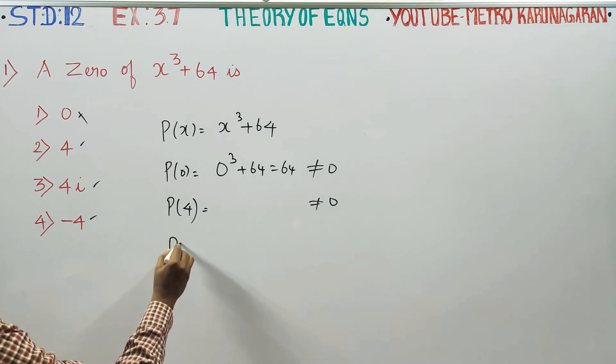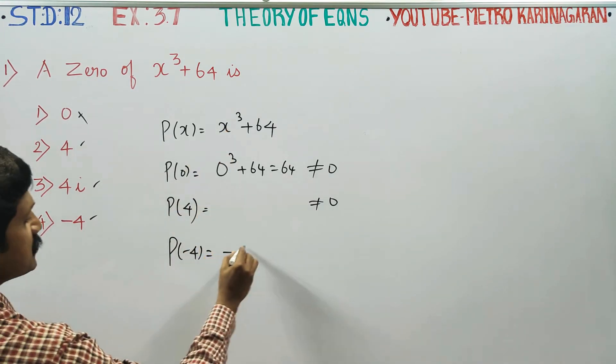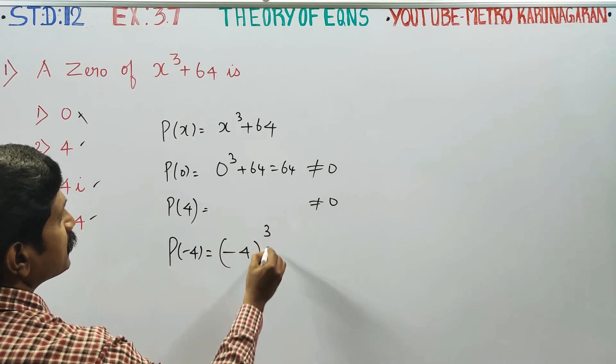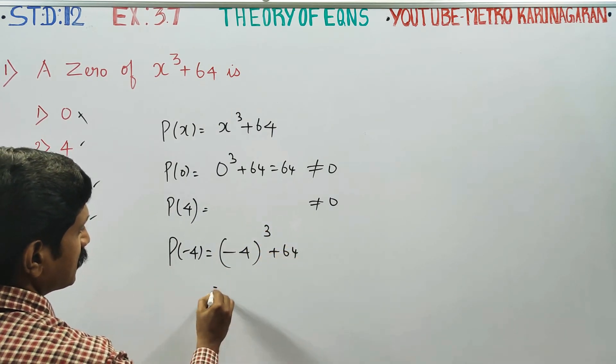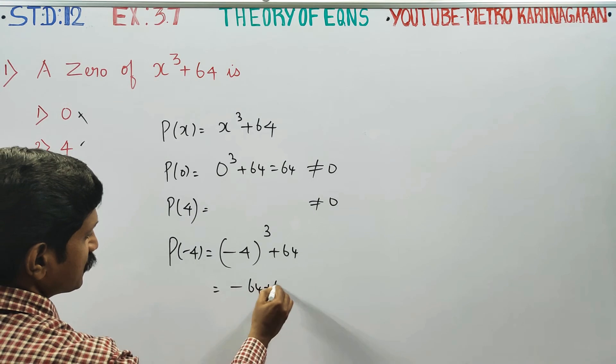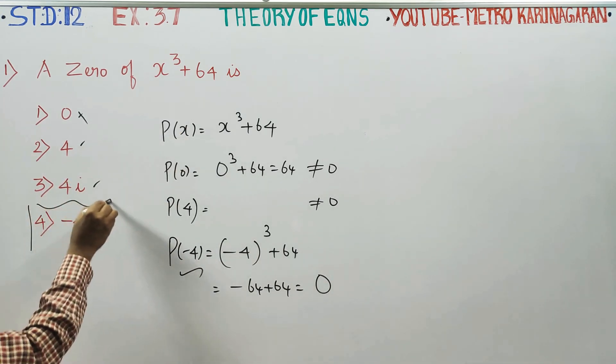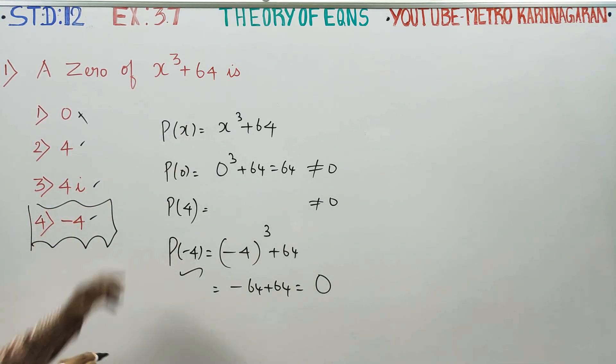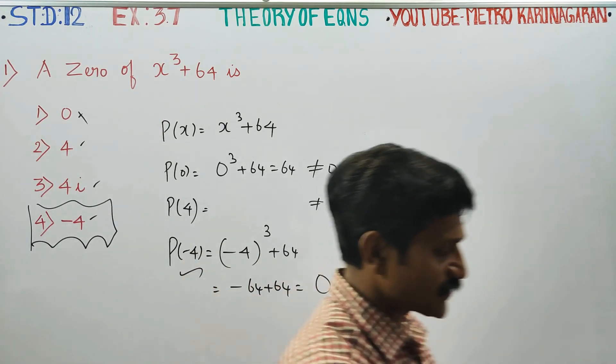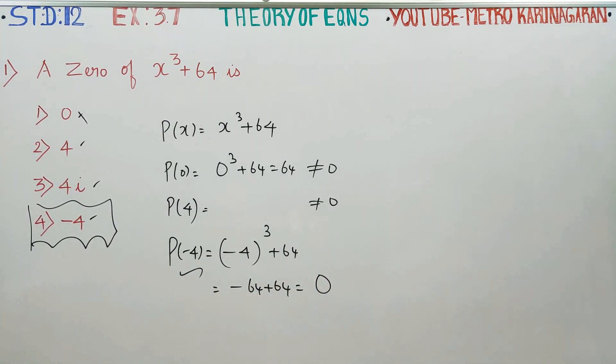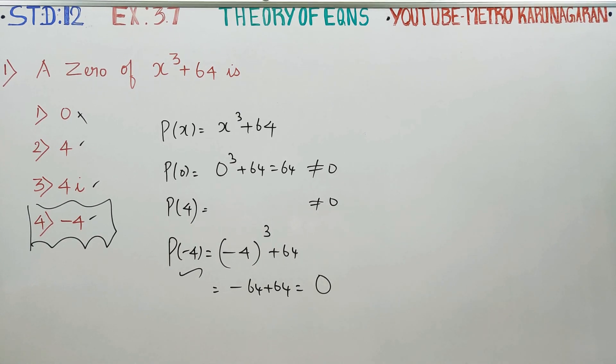The last option: try -4. Substitute -4 in the cube plus 64. This is -64 and +64, your answer is 0. Therefore, this is your exact root or zero of this polynomial. My best answer will be -4. If you substitute -4 instead of x, then the value of this polynomial will be 0. Therefore, -4 is the zero of this polynomial. Thank you.